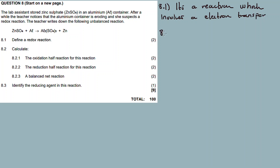Question 8.2.1: Calculate the oxidation half reaction for this reaction. Now for redox reactions, there's something called electrochemistry — the study of galvanic cells and electrolytic cells. For the oxidation half reaction: oxidation involves the loss of electrons, and reduction involves the gain of electrons.